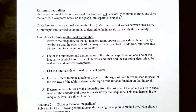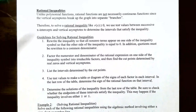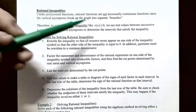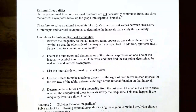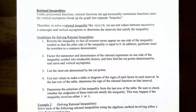Now let's talk about rational inequalities. Unlike polynomial functions, rational functions are not necessarily continuous because they can contain vertical asymptotes and holes in the graph, causing the graph to break into separate branches. When solving a rational inequality, we use test values between successive x-intercepts but also between vertical asymptotes, since the graph can change sign on either side of a vertical asymptote.